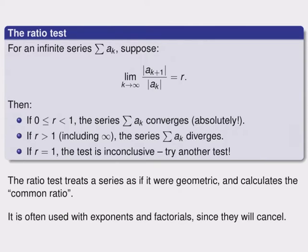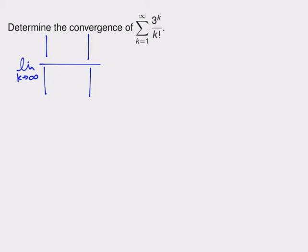This test is often used with exponents and factorials, since they'll cancel in the fraction that we have to calculate. So let's get on to an example here. Our first example is to determine the convergence of this series. Well this series has both an exponent and a factorial, so it's a great candidate for the ratio test, and that's probably the first one I would try.